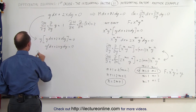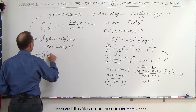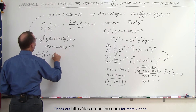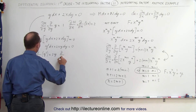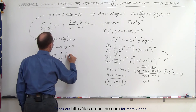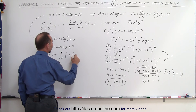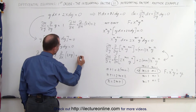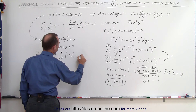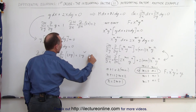We take the partial with respect to y of y², which equals 2y. And the partial with respect to x of 2xy — where 2y is the constant and x is the variable — equals 2y. Since both partials are equal to 2y, we now have a confirmed exact equation.